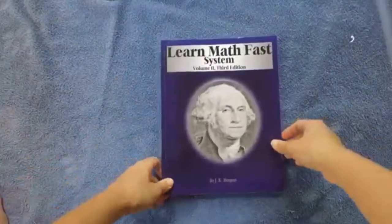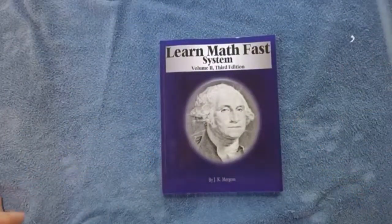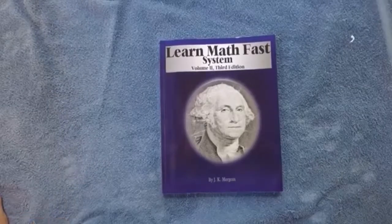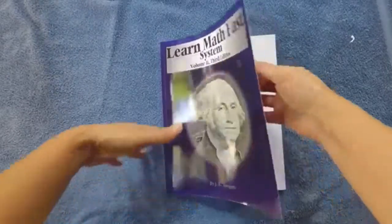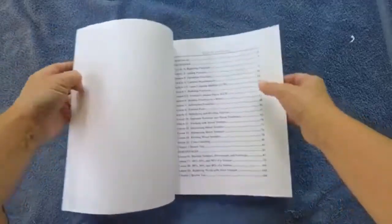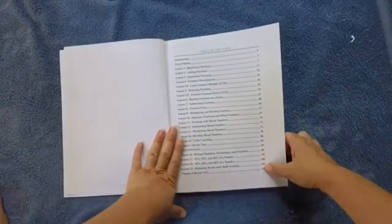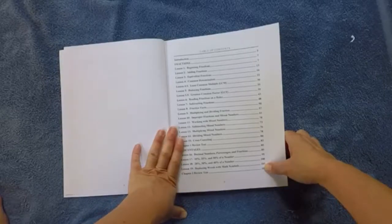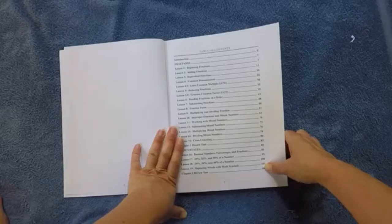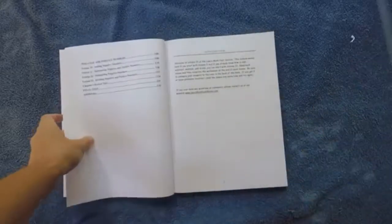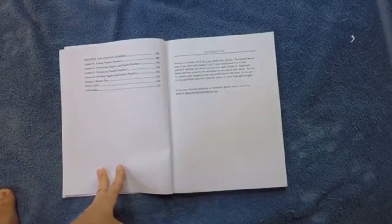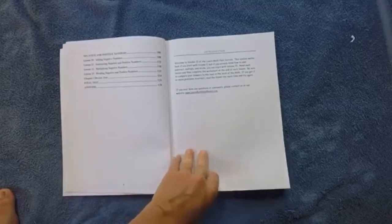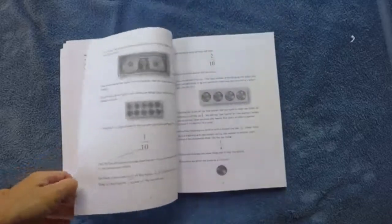And this is Volume 2, which is where I started my 12-year-old on. He finished 6th grade in public school with a lot of gaps. And as you can see, it's the same thing. It starts with fractions, reading fractions on a ruler, mixed numbers, decimals, percentages, fractions, negative numbers. And that's where Volume 2 ends.